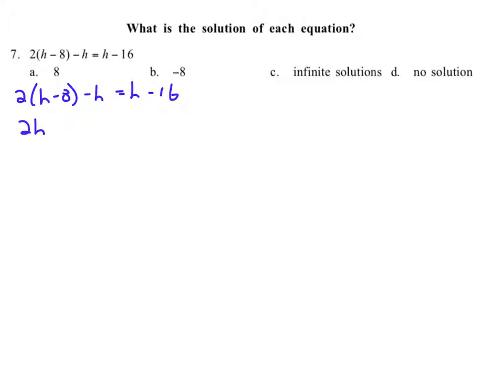So we've got 2 times h, 2h. 2 times negative 8, negative 16. Minus h equals h minus 16. And now combining like terms of 2h minus h. We have two h's we take away an h. We've got h-16 = h-16.